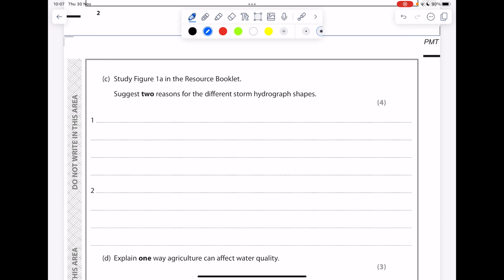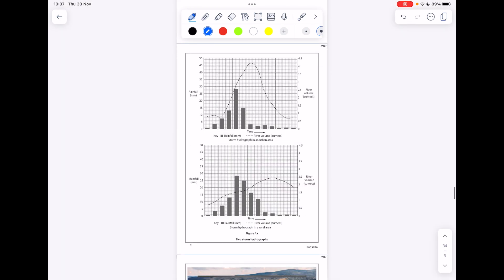Next question. Study figure 1a, suggest two reasons for the different storm hydrograph shapes, four marks. So here are our storm hydrographs. I'm hoping you can see this is a flashy storm hydrograph. We've got that shorter lag time, the higher peak discharge, the steep rising limb. This is a subdued storm hydrograph. We've got a much lower peak discharge, a shallower rising limb, and a longer lag time.